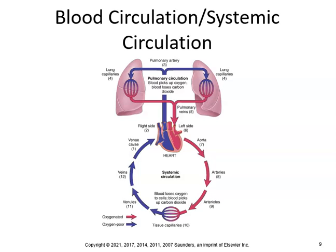Understanding the basic flow of the heart is very important. Deoxygenated, oxygen-poor blood arrives at the heart via the inferior and superior vena cavae, goes to the right atrium, then to the right ventricle, which pumps it into the lungs to be oxygenated. Oxygen-rich, bright red blood then comes into the left atrium, then the left ventricle, which pumps it through the aorta to the body.